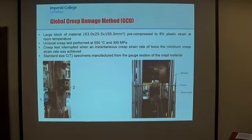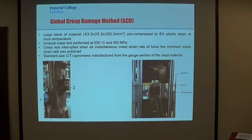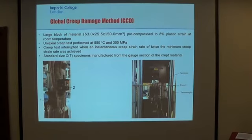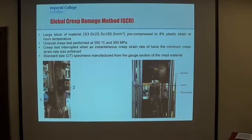The material can be globally creep damaged by performing a global creep test, which consists of a uniaxial creep test on a large block of material in order to achieve a certain amount of creep damage which is globally and uniformly distributed. In the case study conducted by Dr. Memon Parast, a large block of 316H was first pre-compressed to 8% plastic strain to limit plastic strain during loading in the subsequent creep test. The uniaxial creep test was conducted at 550°C and 300MPa applied load, and was interrupted when a creep strain rate of around twice the minimum creep strain rate was achieved.